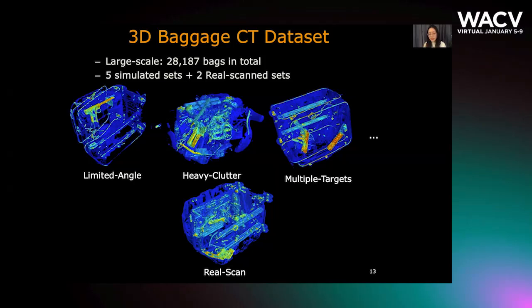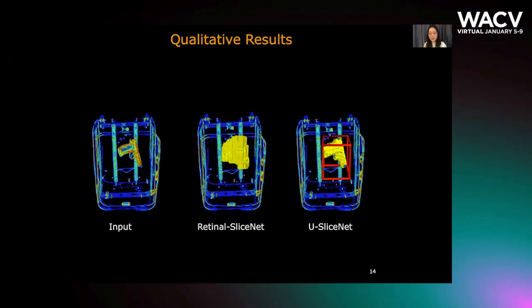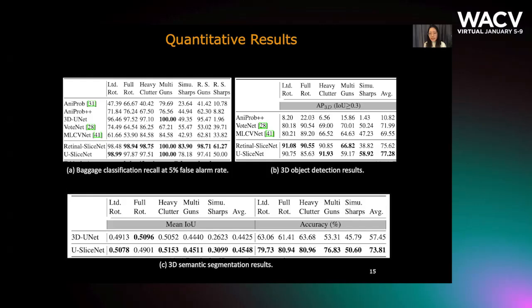Here is an example of 3D detection and segmentation results from SliceNet. We also show quantitative results for three tasks: package classification, detection, and segmentation. We outperform current state-of-the-art 3D detection and segmentation methods by a large margin. Please see our paper for more results. Thank you for your attention.